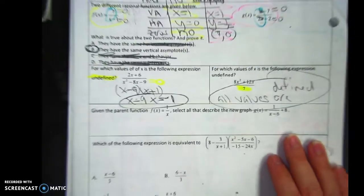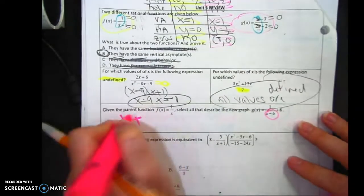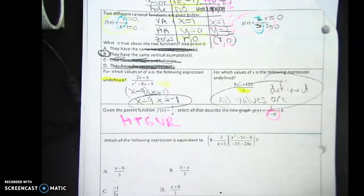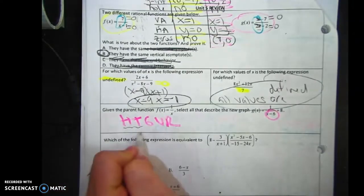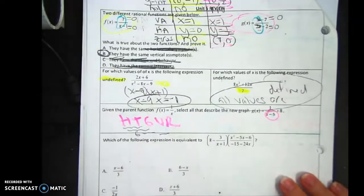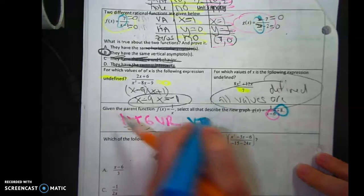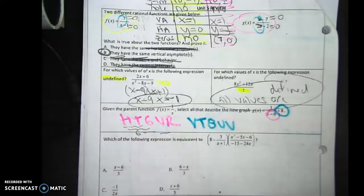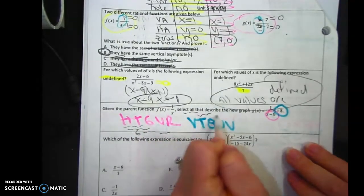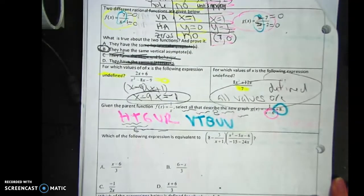Given the parent function, describe the graph. So this is horizontal translation, six units right. You're going to write the word horizontal translation, six units right. If you write HT6UR, you're wrong. Eight vertical translation, eight units up. Vertical translation, eight units up.